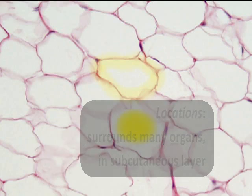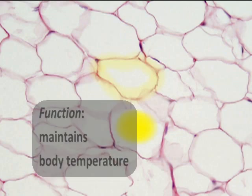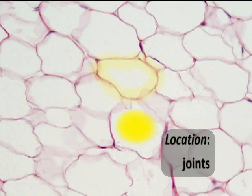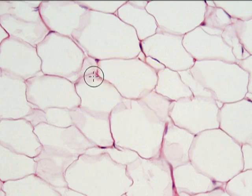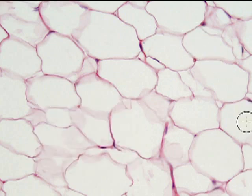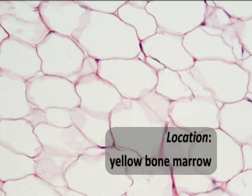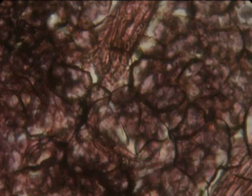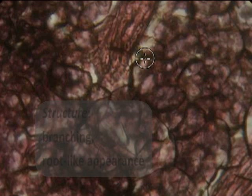Adipose is an insulator — it surrounds many organs such as the heart and is found in the subcutaneous layer underneath the skin, helping to maintain body temperature. It provides tremendous cushion and support, being a prominent tissue in many joints to cushion from the impact of movement. The general appearance is very open and porous, almost spongy, with thin membranes that maximize surface area to hold large amounts of triglyceride fats. It's also found within bone in the yellow bone marrow, which provides an energy supply.